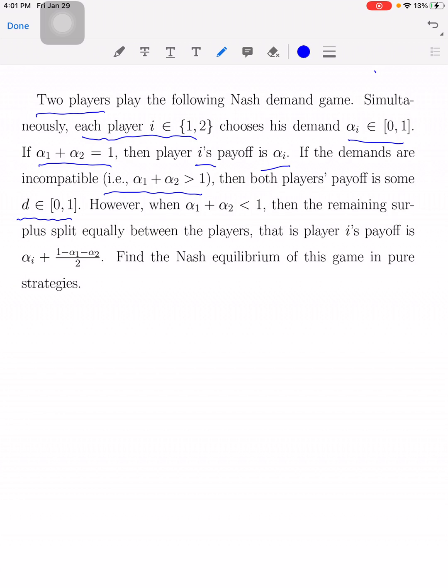So the idea is basically following. If the players demand something more than what's available on the bargaining table, which is normalized to 1, well, that means the negotiation will fail and everybody is going to receive his or her outside option, which is d for both players.